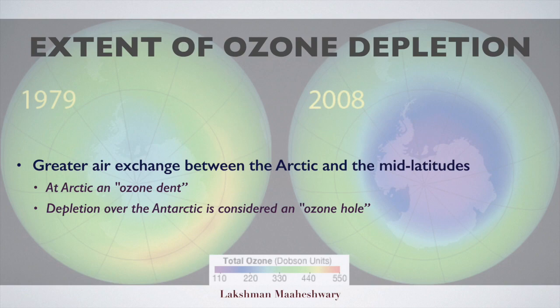However, even at the Arctic the situation is bad. You can see the comparative data between 1979 and 2008 — the total ozone has decreased by more than half.